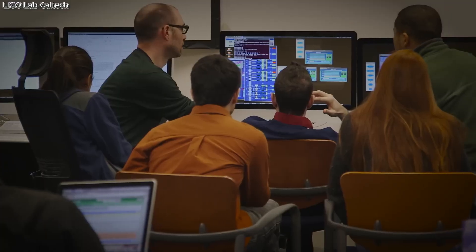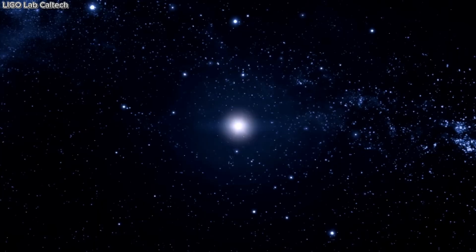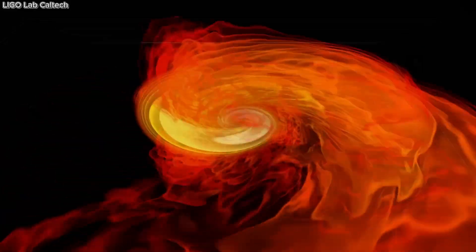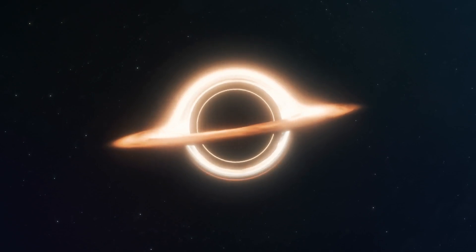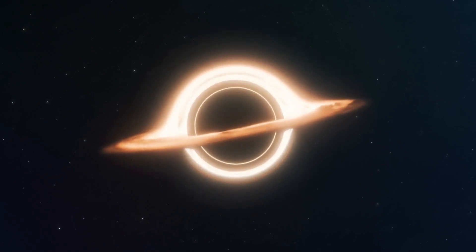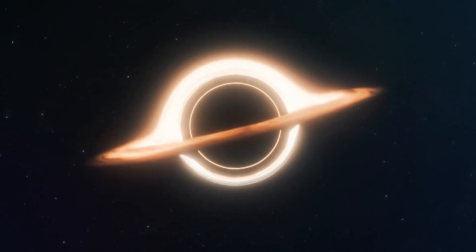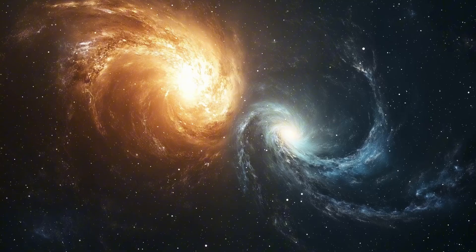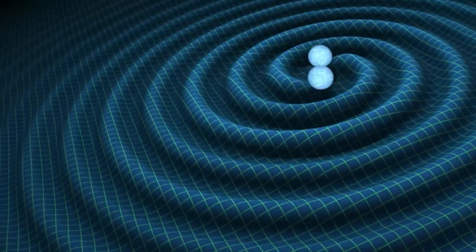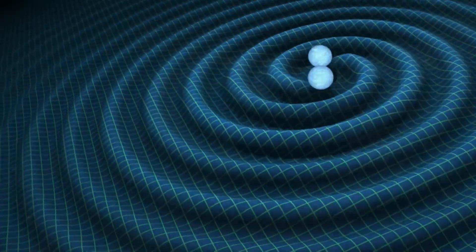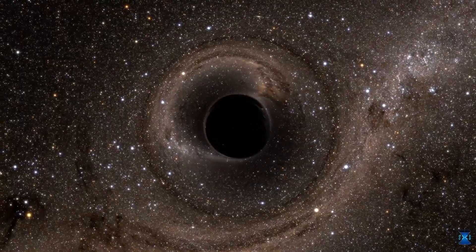But then, the anomaly arrived. It was a signal that registered on the detectors, but it played by none of the established rules. It was a ghost in the machine. At first glance, the waveform bore a passing resemblance to a standard binary black hole merger. It had the beginning of the inspiral phase, the part of the cosmic song where two massive objects circle each other, closer and closer, faster and faster, warping space-time around them.